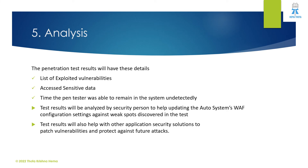Stage five is analysis. The pen test results will contain details such as specific vulnerabilities that were exploited, a list of sensitive data that was accessed, and the amount of time the pen tester was able to remain in the system undetected. Test results are analyzed by security personnel to help update the automotive system's WAF configuration settings against weaknesses discovered in the test, and to patch vulnerabilities and protect against future attacks.